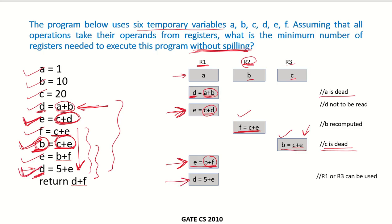So here 5 plus e. e is not going to be used anywhere. So we can use R1 and we can also use R3 because b is also not going to be used anywhere. So R1 or R3 can be used to store the new value of d.